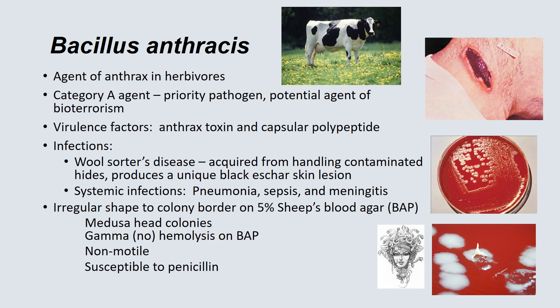On a blood agar plate, Bacillus anthracis shows irregular colony border shape on 5% sheep's blood agar with no hemolysis. If you use a loop or stick to pick up the colony, it stands straight up — that is known as a medusa head colony. Bacillus anthracis is non-motile and susceptible to penicillin, and this can be used to separate it from other Bacillus species.